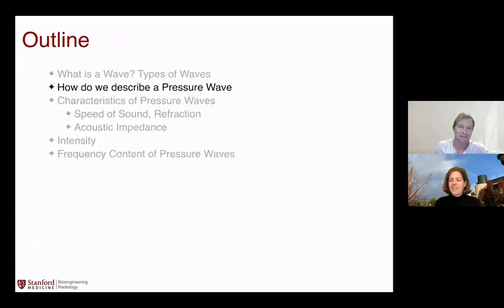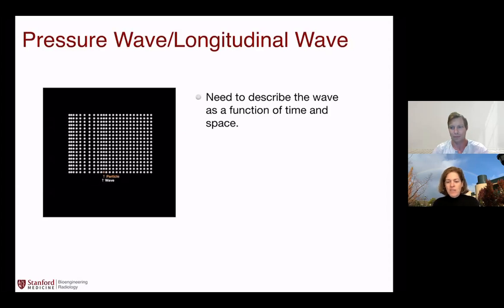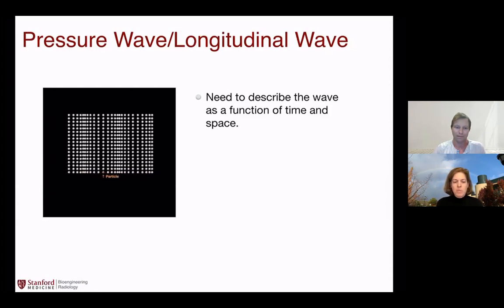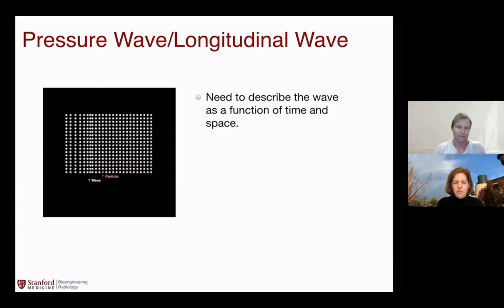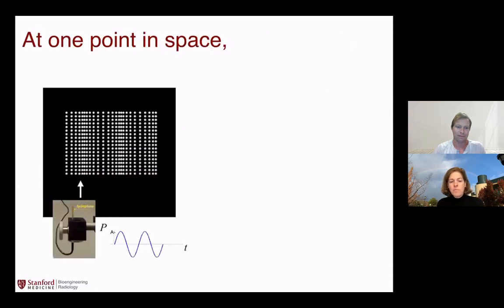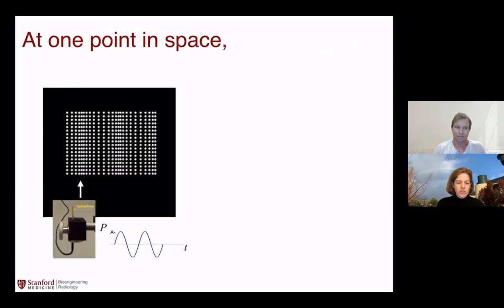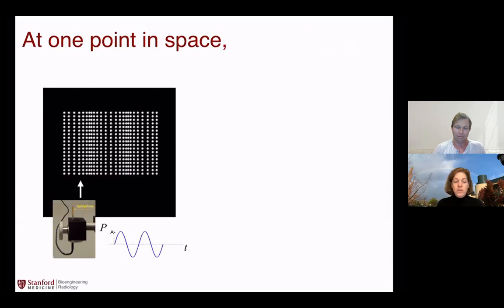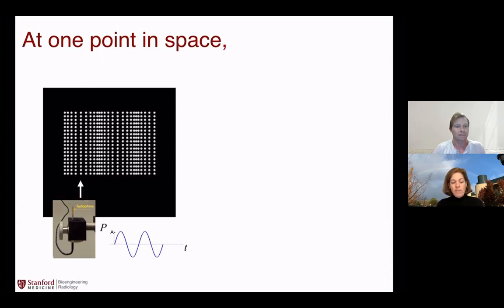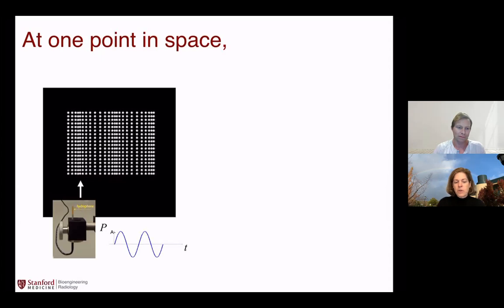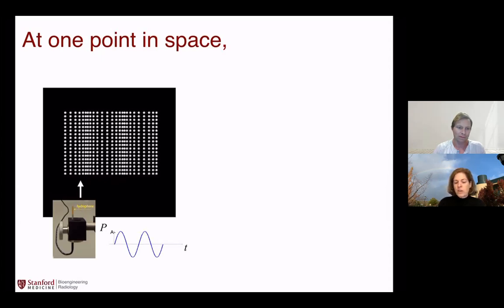Let's talk about how we describe pressure waves as a function of space and time. This animation shows high pressure points moving through — the wave is pushing through. If you're at one point in space making a measurement, the way we measure sound in tissue or water is with a hydrophone, which is essentially a small ultrasound transducer we can move around to map pressure. At one point in space, the pressure waves come by — high pressure, low pressure — tracing out a sinusoid over time.